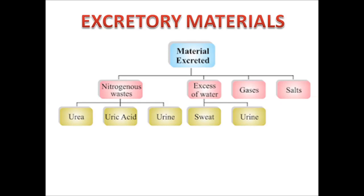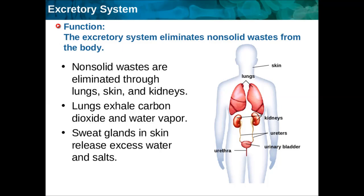The excretory materials in the human body are nitrogenous waste, excess water, gases and salts. In nitrogenous waste, this includes urea, uric acid and urine. Urea is produced as a by-product of the body; uric acid is produced as a by-product of enzymatic actions. Excess water in our body is excreted as sweat, where excess salt is excreted by sweat glands. Gases and salts are also excreted through these mentioned processes.